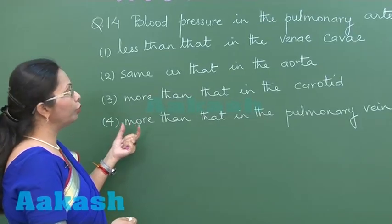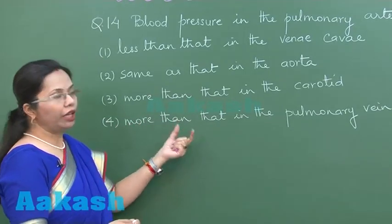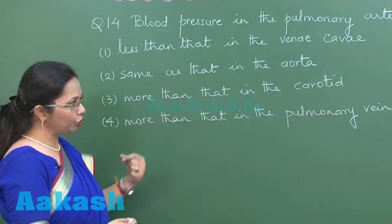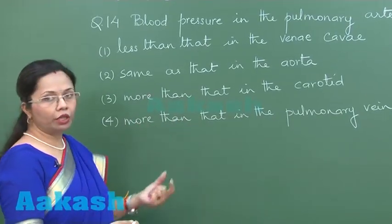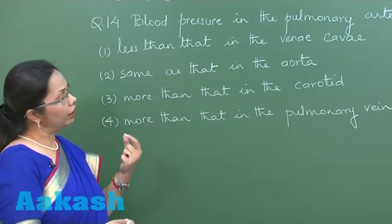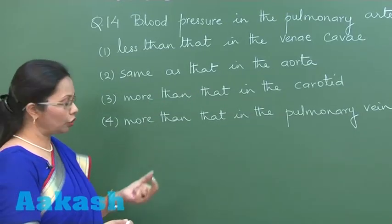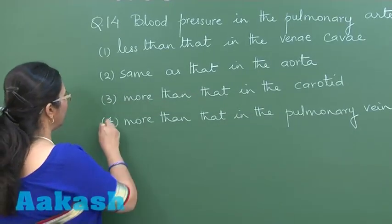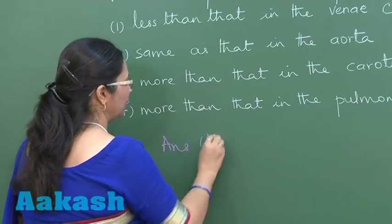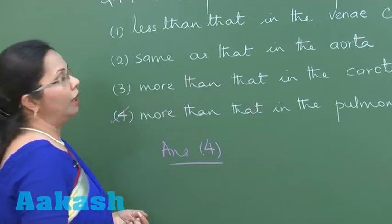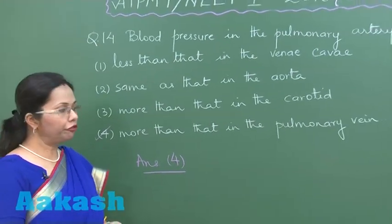Now this is certainly true because pulmonary vein is bringing blood back to the heart. So this is at a lower pressure while in the pulmonary artery the blood is pumped by the right ventricle and that is at a higher pressure. So here the answer is fourth. Now let's move on to question number 15.